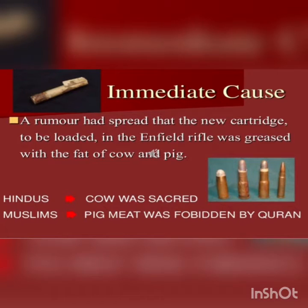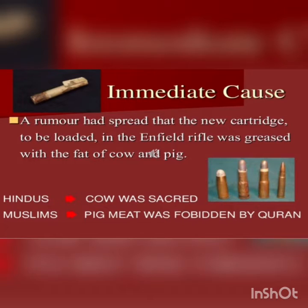After discussing the various causes of the revolt, it is clear that tension was simmering among Indians and they were full of anger against the British. The only thing needed was just a spark for the outbreak of the revolt. This spark came from the Enfield rifle, which was the immediate cause for the revolt. A rumor spread that the new cartridge to be loaded in the Enfield rifle was greased with the fat of cow and pig.